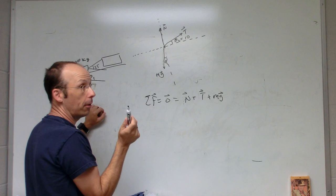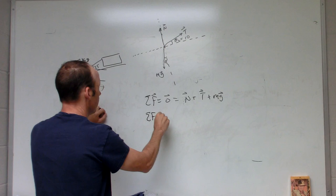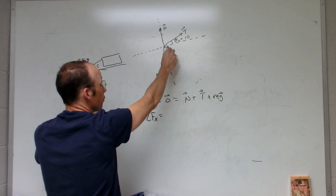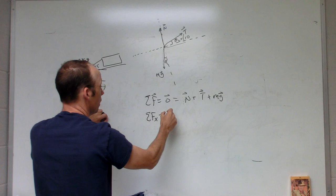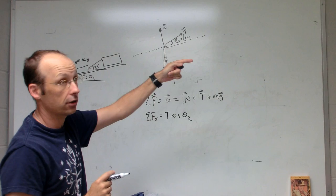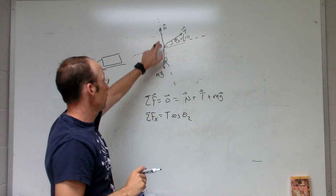Let's do the x equation. ΣFx: which of these forces are in the x direction? That has a component in the x direction—the adjacent side for that angle—so this would be T cos(θ2) in the positive x direction. This one's not pointing in the x direction at all, and this one's in the negative x direction. I want the opposite side of that angle.